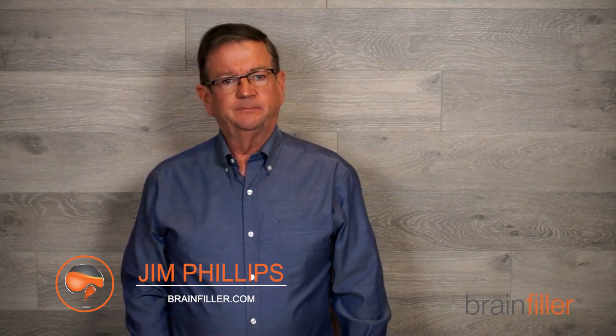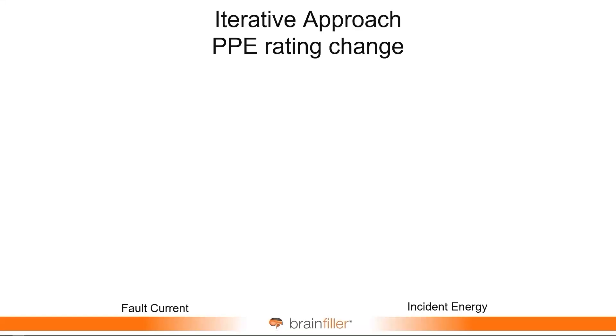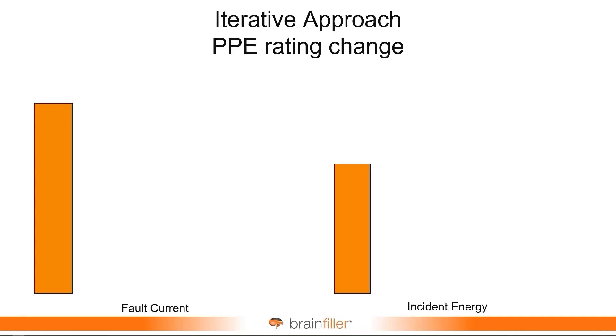Sometimes people will question — well, I don't actually know the actual fault current from the utility, or it could vary or something like that. So for years now, I've been advocating in that case — it's not a perfect answer — but perhaps use an iterative kind of approach. What that is: you begin with the initial fault current, basically the highest fault current, and you conduct your study, and you'll get a resulting incident energy.